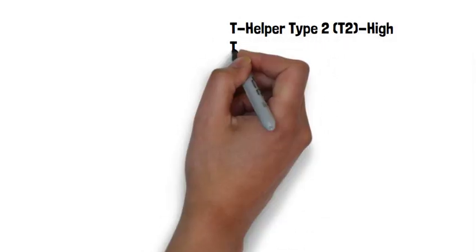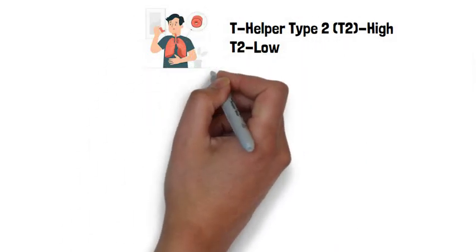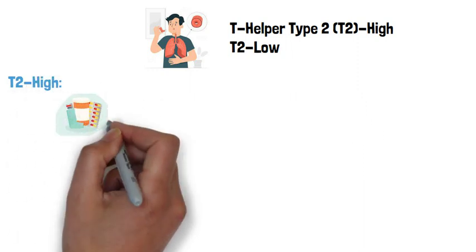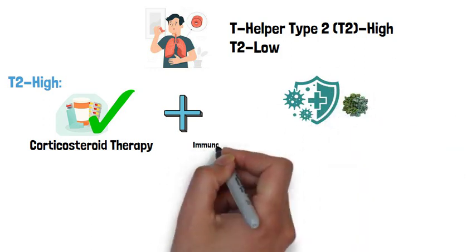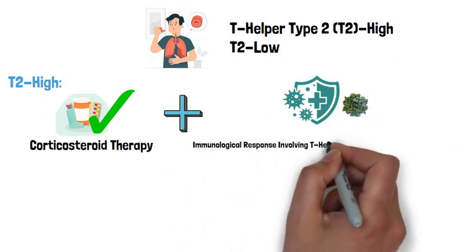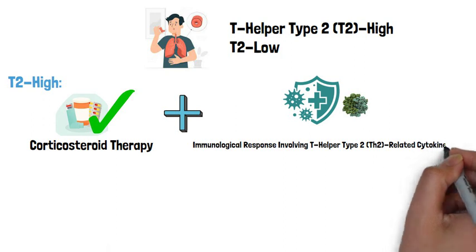T2-high and T2-low are the two most well-recognized asthma endotypes. T2-high asthma typically responds well to corticosteroid therapy and has an immunological response primarily involving T helper type 2 related cytokines.